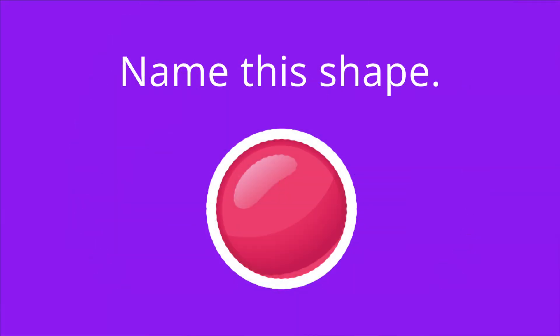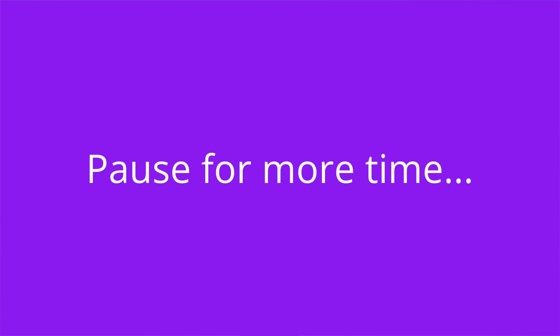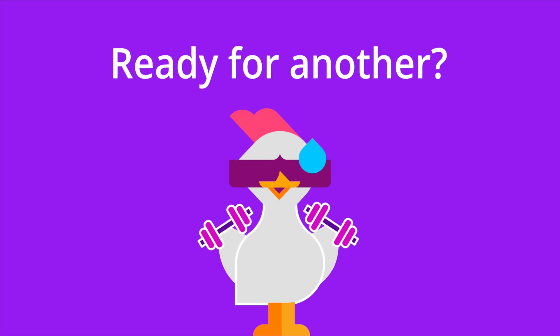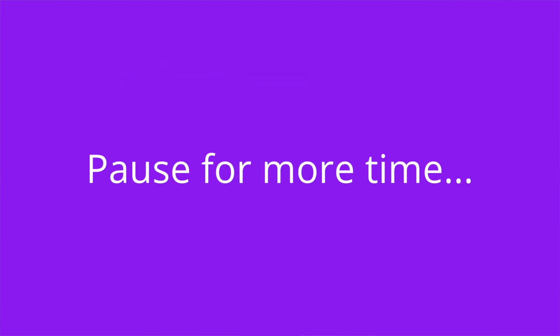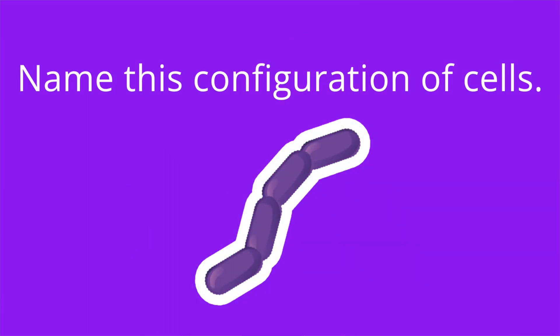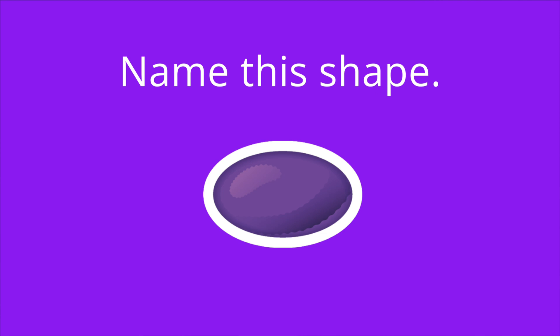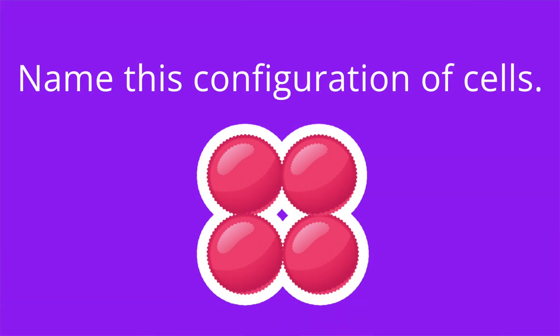It's quiz time. I want you to name that cell shape or the configuration of cells. Number one, name this shape. The answer is coccus. Number two, name this configuration of cells. The answer is staphylococci. Number three, name this shape. Coccobacillus. Number four, name this configuration of cells. The answer is streptobacilli. Number five, name this shape. The answer is coccobacillus. Number six, name this configuration of cells. The answer is tetrad.